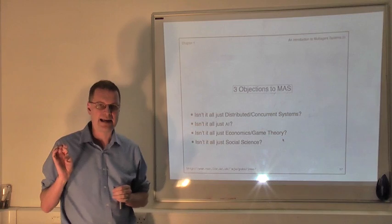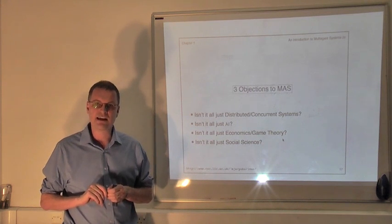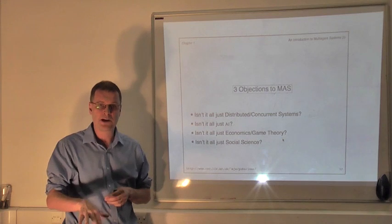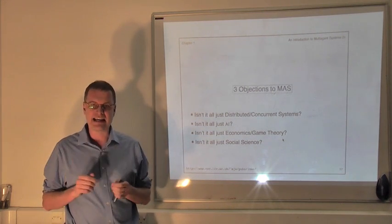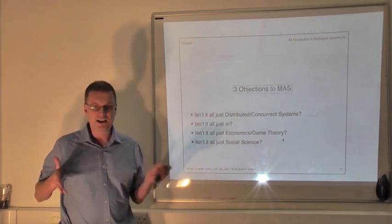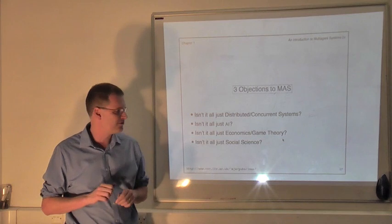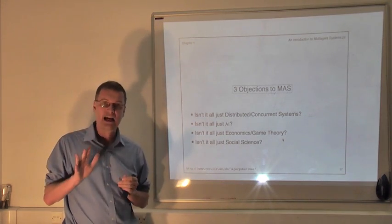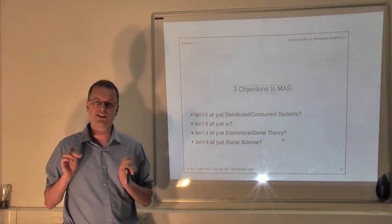Let's take the example of eBay. On eBay, which is very like a multi-agent system except that the participants are people, you've got people buying and selling things. Typically the buyer wants the lowest price possible and the seller wants the highest price possible. You could view eBay as a distributed system and think about classic distributed system questions like deadlock and livelock, but you're really missing the point. The point is that the seller and buyer are acting strategically — there are strategic considerations there.